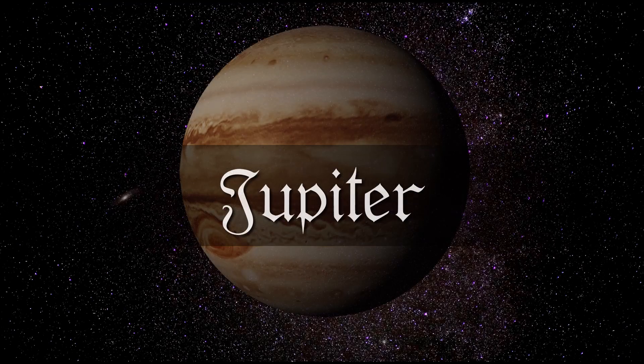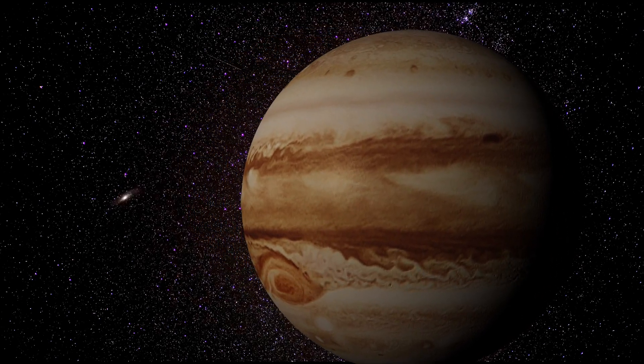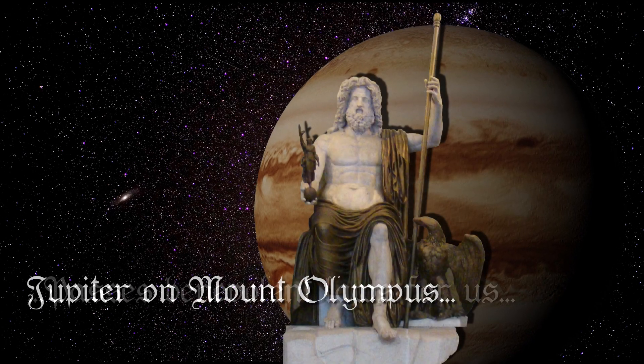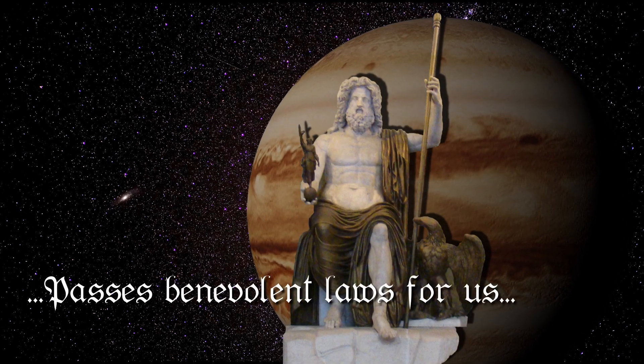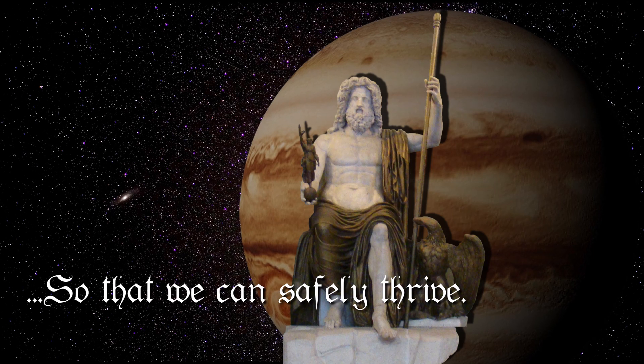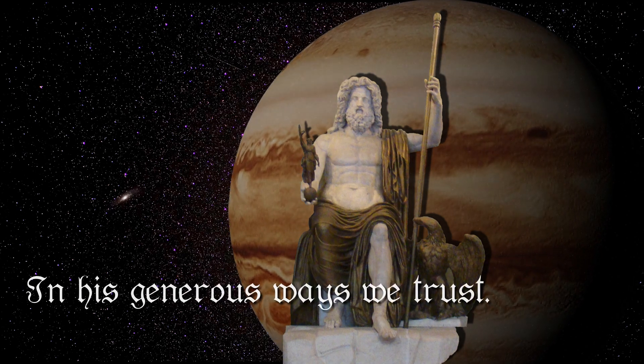Meaning of the Planets Jupiter. Jupiter on Mount Olympus passes benevolent laws for us so that we can safely thrive, in his generous ways we trust.